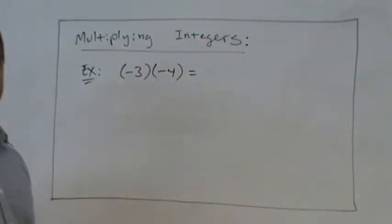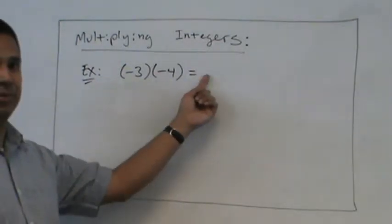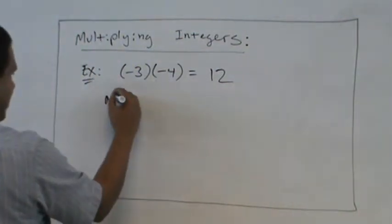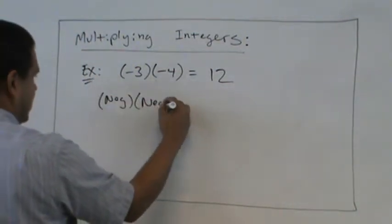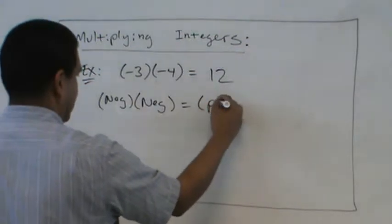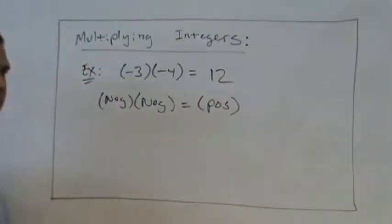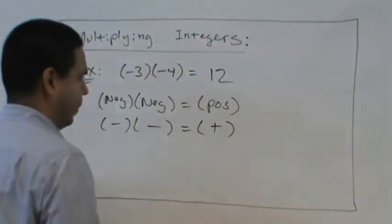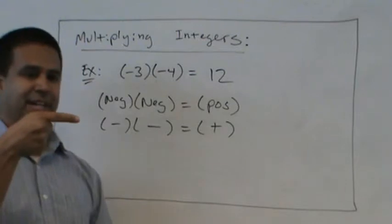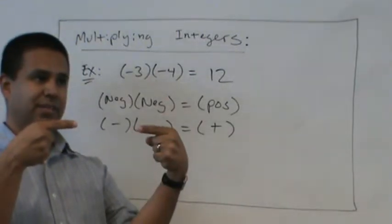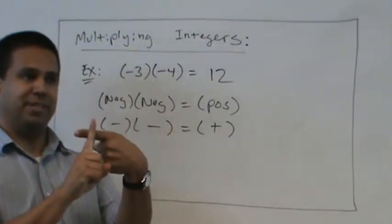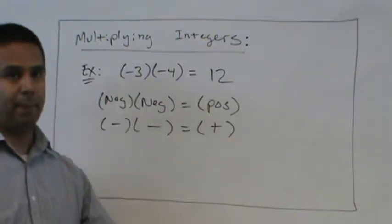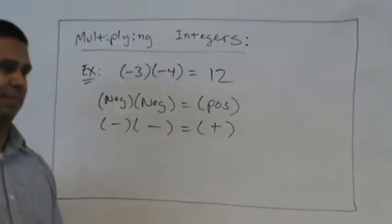So we all know a negative times a negative equals a positive. So we know negative times a negative equals a positive. And I've showed some of you before, a negative with a negative, you got two negatives, you can make a positive. So negative times negative, positive. That's it. That's one of the rules. Simple.